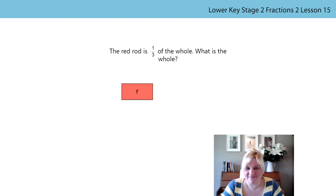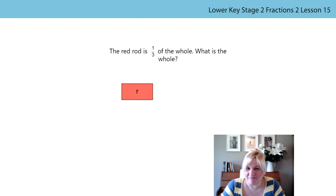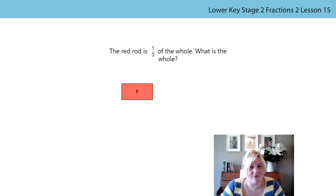Here on the board you can see a red rod. You might have seen Cuisenaire rods at school. They can help us to make the whole from parts. Don't worry about the letters on the rods - they refer to the colours. So R means it's a red rod, D is for dark green, and so on. Today we're going to build the whole using unit fractions. Remember, a unit fraction is any fraction with a numerator - the number on the top - that is one. One half, one third, one quarter and one eighth are all unit fractions.